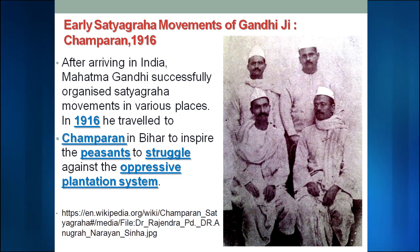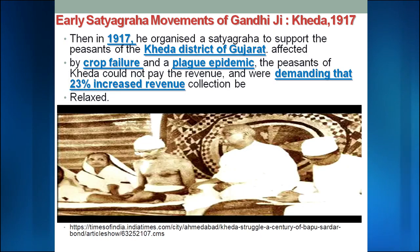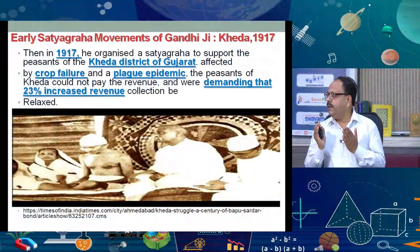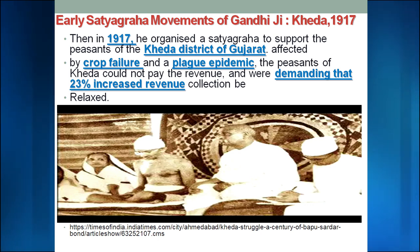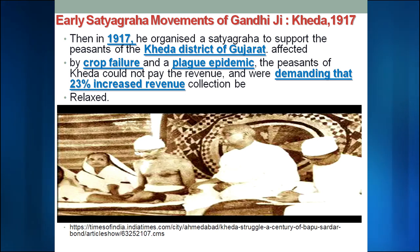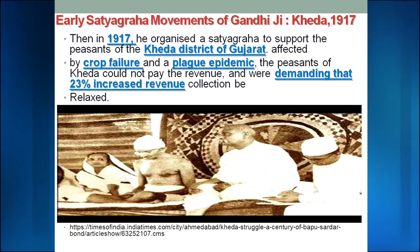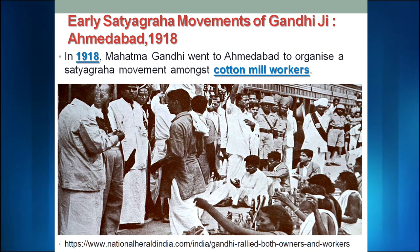The British were forced to reduce and cancel the contracts, and so the Champaran movement was successful. The next movement was the Kheda Movement. Kheda is a district in Gujarat where at that time the region was suffering from plague and crop failure. The British raised the revenue by 23 percent, which was unbearable for the farmers. Gandhi Ji went there and united the farmers as he did in Champaran, and ultimately the British were forced to reduce the increased taxes and revenue.